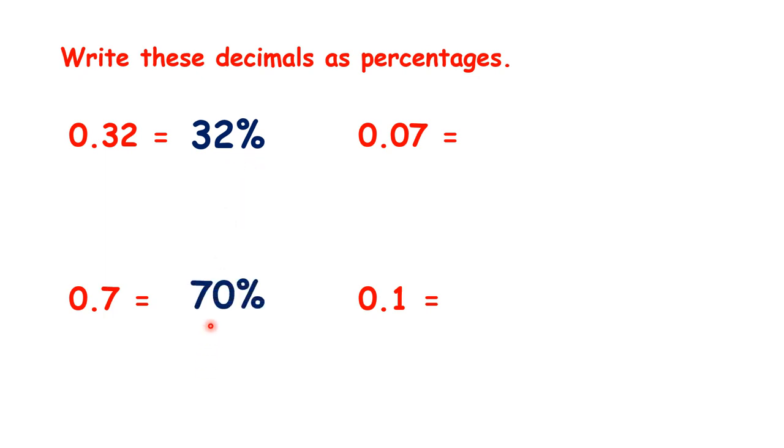Then we have 70%, not 7%. Why not? Well, 0.7 is 7 tenths, but percent means out of 100, and because 7 tenths is equivalent to 70 hundredths, it has to be 70%.